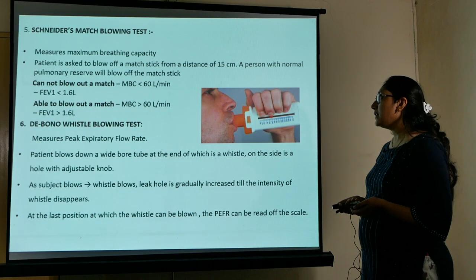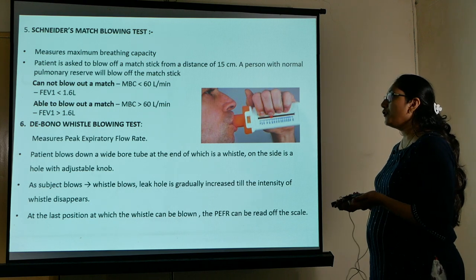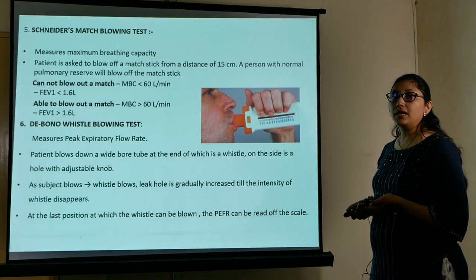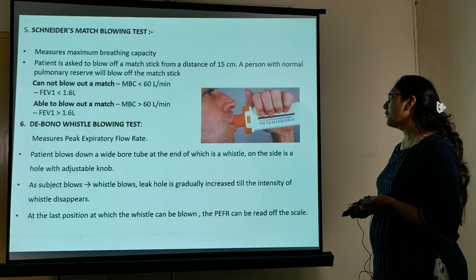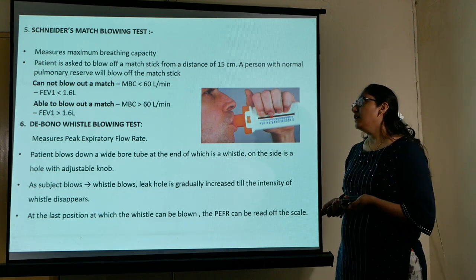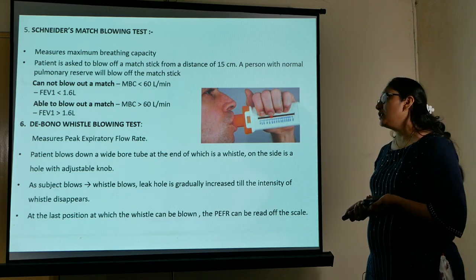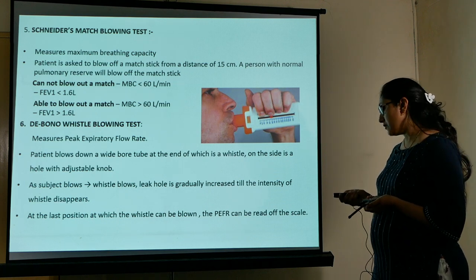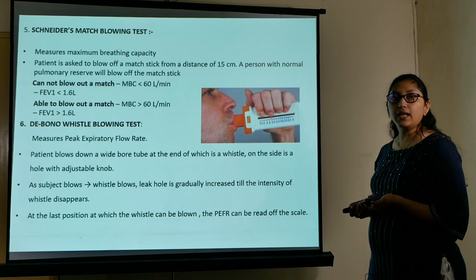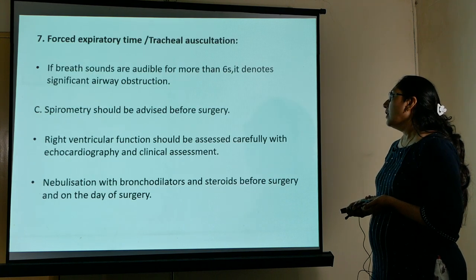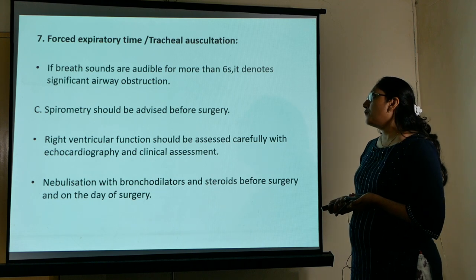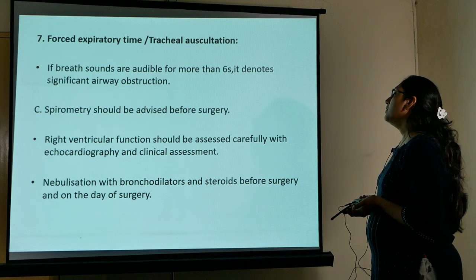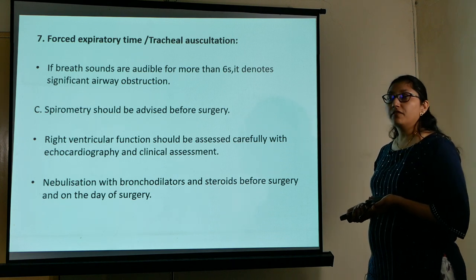The match blowing test involves asking the patient to blow a match stick at a distance of 15 centimeters; if successful, it indicates a maximum breathing capacity of more than 60 liters per minute. The De Bono whistle blowing test measures peak expiratory flow rate. Forced expiratory time via tracheal auscultation: if breath sounds are audible for more than 6 seconds, it denotes significant airway obstruction.